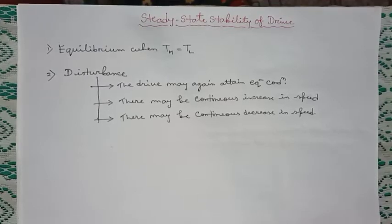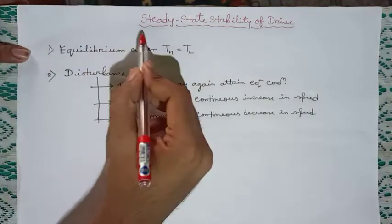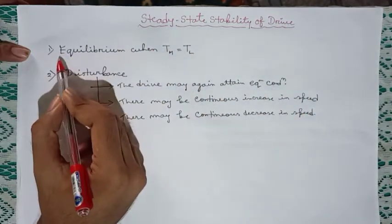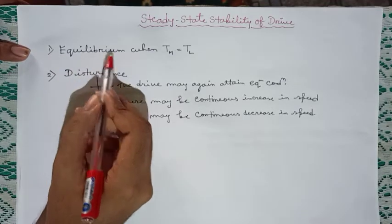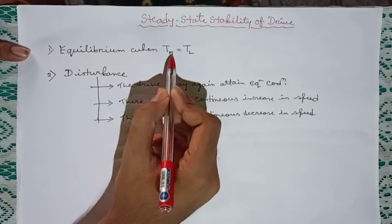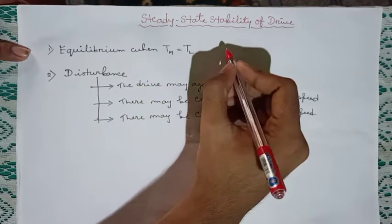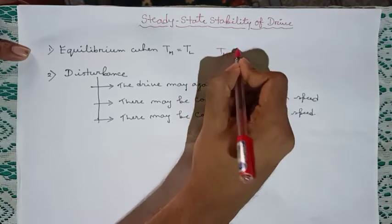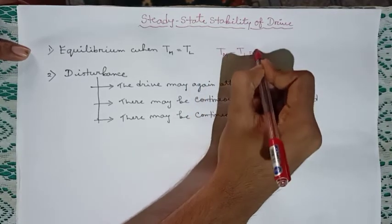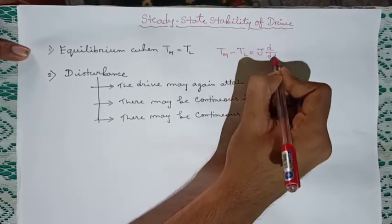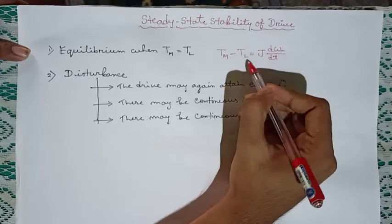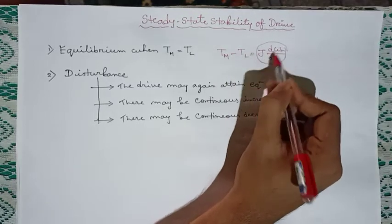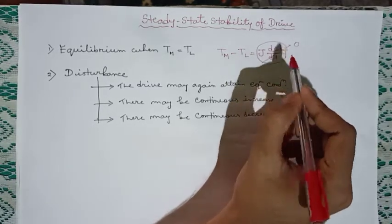Welcome to Electrical Point. In this video I am going to explain the steady-state stability of electric drives. A drive is in equilibrium condition when the developed motor torque exactly equals the load torque. From the equation of dynamic torque, tm minus tl equals J times d(omega_m)/dt. When tm equals tl, the dynamic torque will be zero.